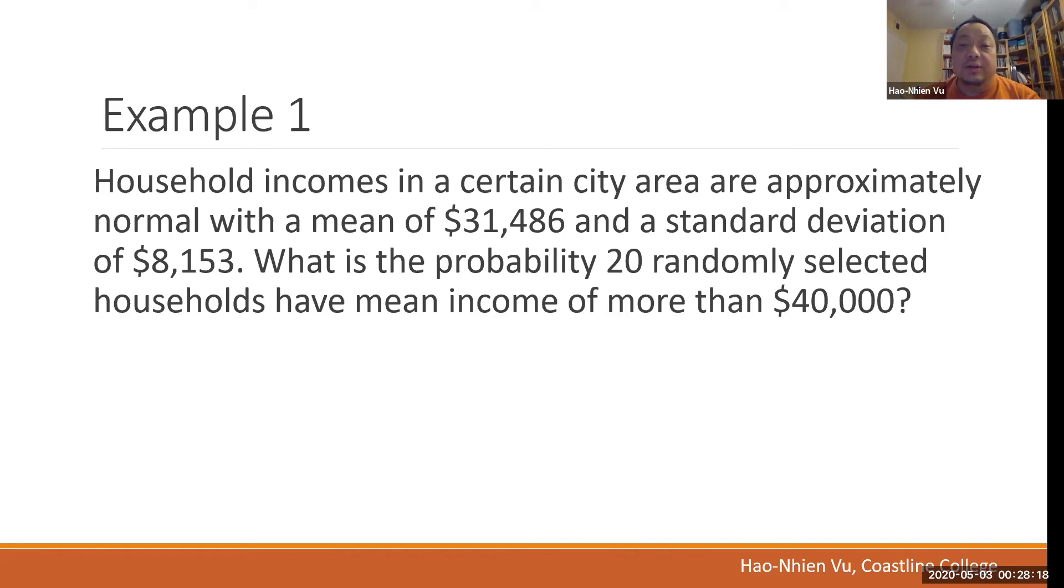It is a CLT problem. Because right here, 20 randomly selected households, that's our sample of size n equals 20. The question prompt asks for the probability regarding a mean. So to do this problem as a CLT problem, I would need to check the conditions. Are the conditions met? Do we have either a normal population or a large enough sample size? In this case, we don't have a large enough sample size, but we do have a population that is approximately normal. So I would have to write all of that down in my solution.